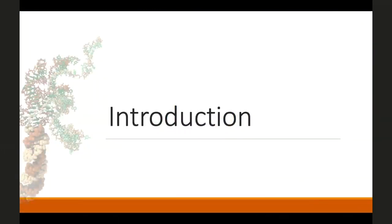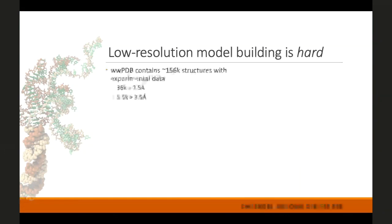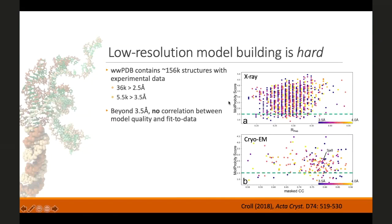I'm going to start with a brief introduction about why ISOLDE and talk about low-resolution model building, which for people that haven't done it before, it is a hard job, and historically has been a very hard job. If we look at the WWPDB as it stands right now, around just over 150,000 structures have experimental data, 36,000 with resolutions lower than 2.5 angstroms, and about 5,500 with resolutions lower than 3.5 angstroms.